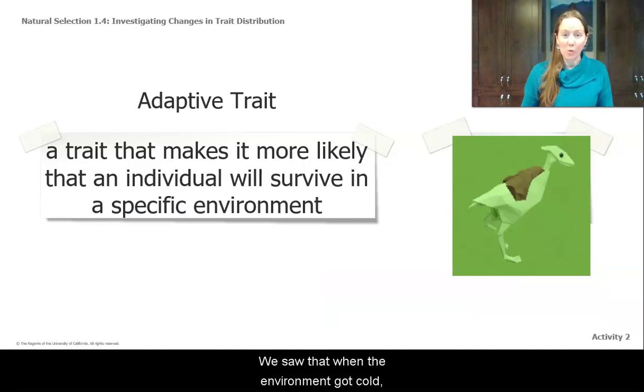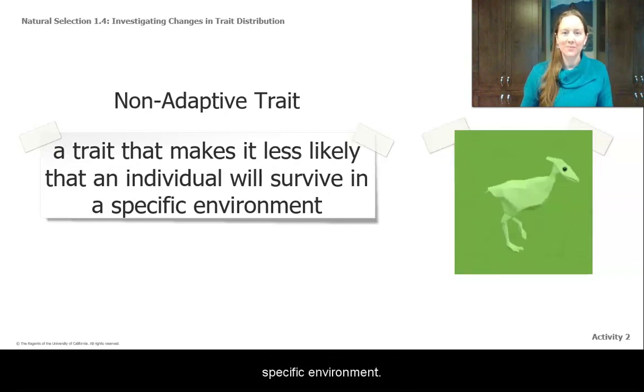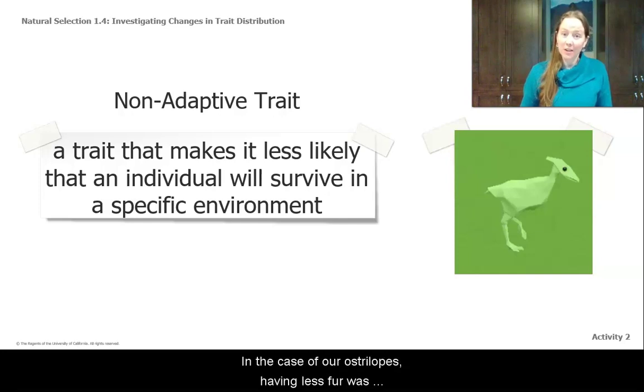We saw that when the environment got cold, the ostrilopes that had more fur were more likely to survive. Scientists call that an adaptive trait. An adaptive trait is a trait that makes it more likely that an individual will survive in a specific environment. A non-adaptive trait is the opposite. A non-adaptive trait is a trait that makes it less likely that an individual will survive in a specific environment. So in the case of our ostrilopes, having less fur was non-adaptive and they were less likely to survive.